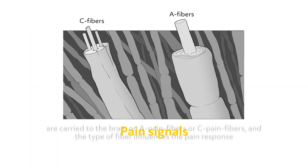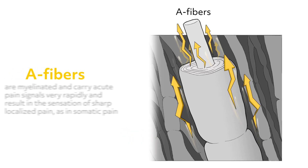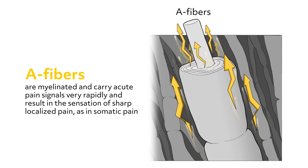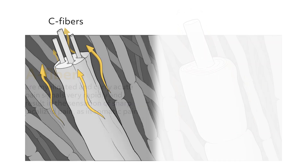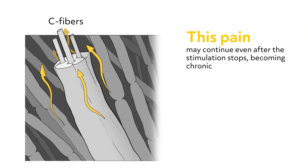Pain signals are carried to the brain on A pain fibers or C pain fibers, and the type of fiber influences the pain response. A fibers are myelinated and carry acute pain signals very rapidly, resulting in the sensation of sharp localized pain, as in somatic pain. C fibers, on the other hand, are unmyelinated and carry pain signals slowly, resulting in a dull, aching, and non-localized sensation of pain or burning pain. This pain may continue even after the stimulation stops, becoming chronic.